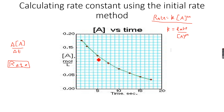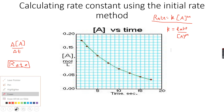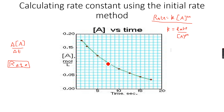For example, at the marked point, we draw a tangent and calculate the gradient of that tangent — that gives the rate at that point. Then from the y-axis we can read the concentration of A at that point. So knowing both the rate and the concentration of A, we use the equation K = rate / [A]^M to calculate K.